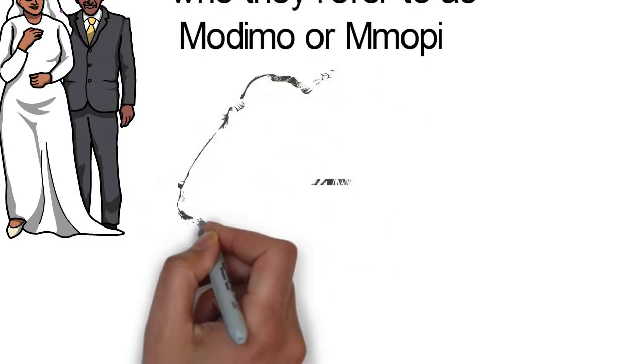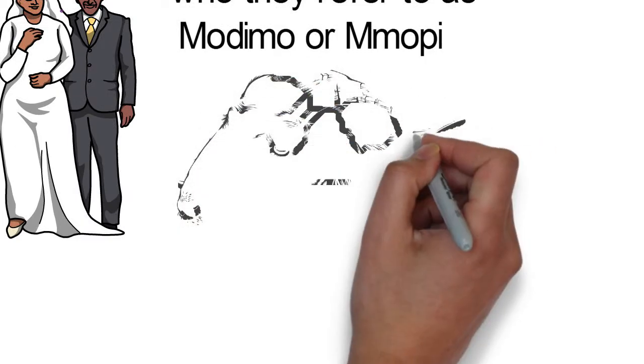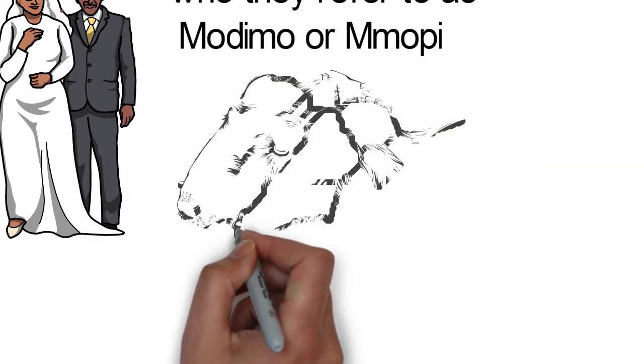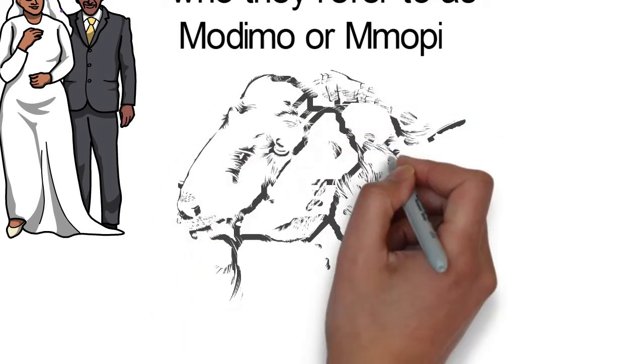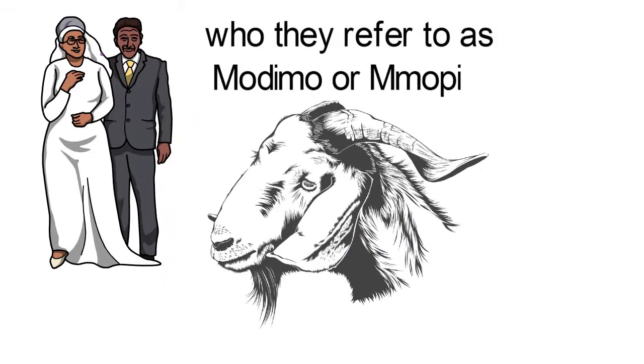They communicate with their ancestors by calling on them through a process of incense burning. They also give offerings and make animal sacrifices to these ancestors.